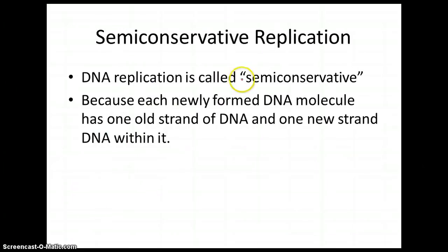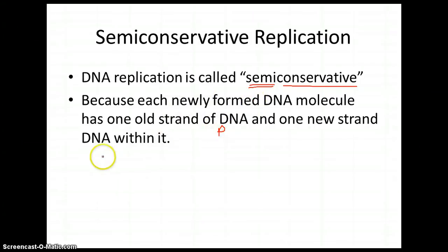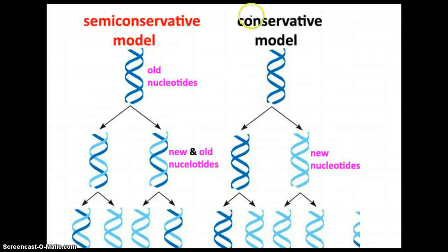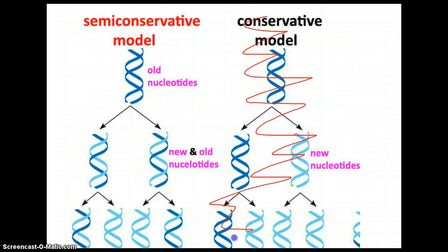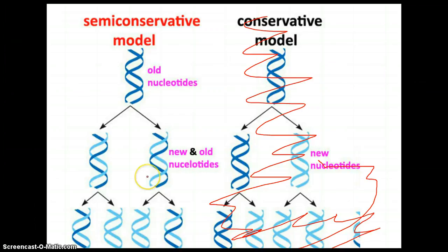DNA replication is called semi-conservative. 'Conserve' means to save, and 'semi' means half. What this means is each newly formed DNA molecule has one old strand of DNA — called the parent strand — with one new strand of DNA — called the daughter strand. So here's our old DNA strand with two dark strands. By the time you make it, each new one has a dark and a light strand. That's called semi-conservative.